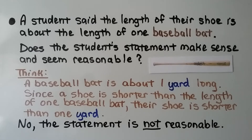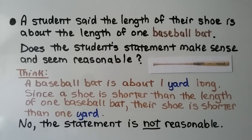A student said the length of their shoe is about the length of one baseball bat. Does the student's statement make sense and seem reasonable? Well, think — a baseball bat is about one yard long, and since a shoe is shorter than the length of one baseball bat, their shoe is shorter than one yard. So, no, the statement is not reasonable.